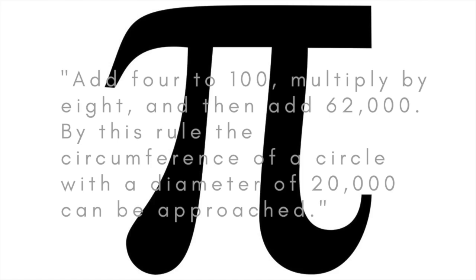It has also been suggested that Aryabhata's use of the word 'approached' indicates that he was aware of the fact that pi is incommensurable, or irrational. If that's the case, it was a remarkable insight, because the irrationality of pi wasn't actually proven until the 18th century.